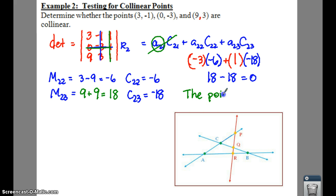If you get anything except for a zero on your determinant, then they will not be collinear. So be on the lookout.